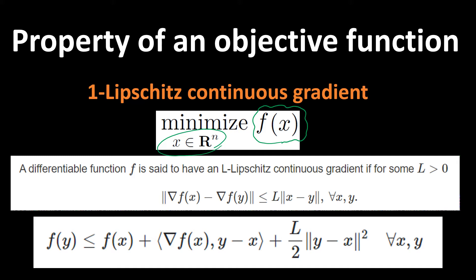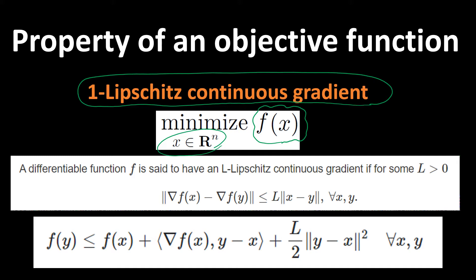One of these properties is Lipschitz continuous gradient, which I am going to explain. This property says that there is a constant L, which has to be greater than zero, such that the distance between gradients at two different points is bounded by the distance between those two points.